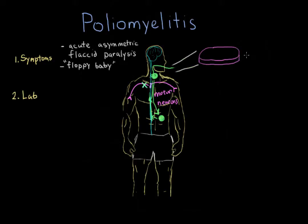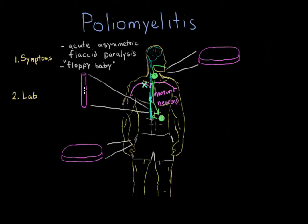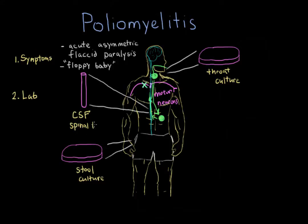There are three lab tests you can perform to diagnose polio. You can isolate the virus from a throat culture. You can also isolate the virus from a stool culture. And the virus can also be isolated from the cerebrospinal fluid, or CSF. This is usually done with a spinal tap, where the doctor inserts a needle into the spine and withdraws some of the fluid. This fluid surrounds all of the central nervous system — it surrounds the brain and encases the spinal cord as well.